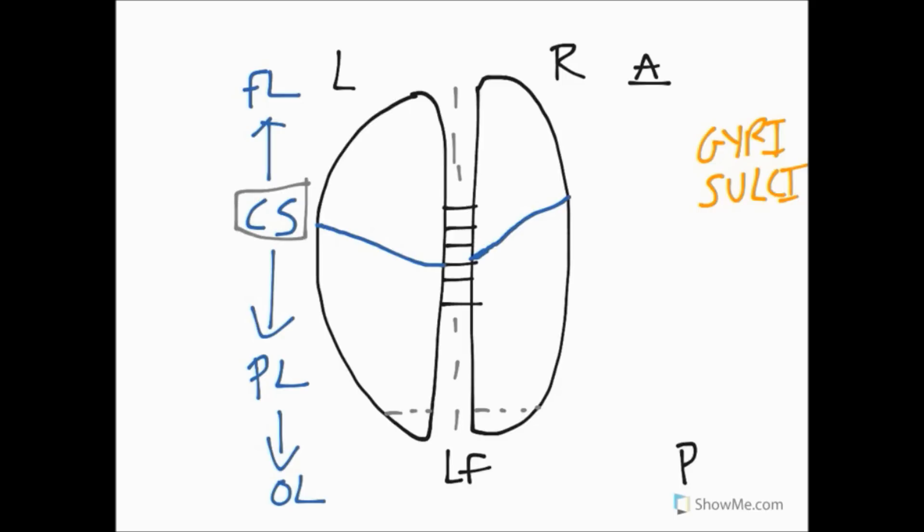Let's go back to our central sulcus and those two strips of cortex that hopefully you've identified. Let's draw them on: one is going to be in the frontal lobe and the other in the parietal lobe. Let's draw them on and name them.